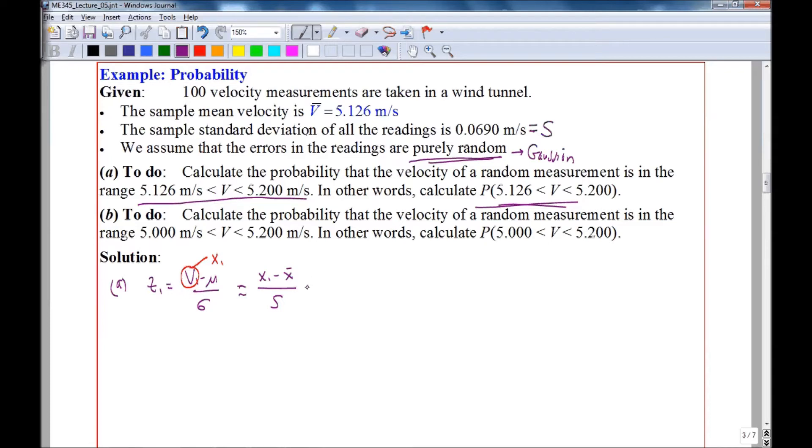And so Z1, since the mean and X1 are the same, Z1 is 0. And Z2, similarly, is X2 minus X bar over S.